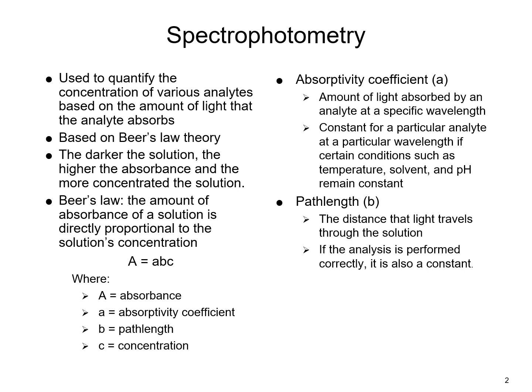Beer's Law states that A, represented by absorbance, equals A times B times C, which equals the absorptivity coefficient, the path length, as well as the concentration. The absorptivity coefficient is the amount of light absorbed by an analyte at a specific wavelength, and it is constant for a particular analyte at a particular wavelength if certain conditions such as temperature, solvent, and pH remain constant. The path length is the distance that the light actually travels through the solution, and if the analysis is performed correctly, it is also a constant.